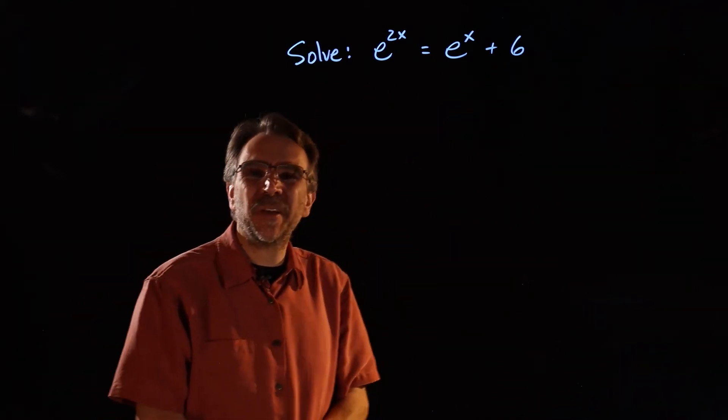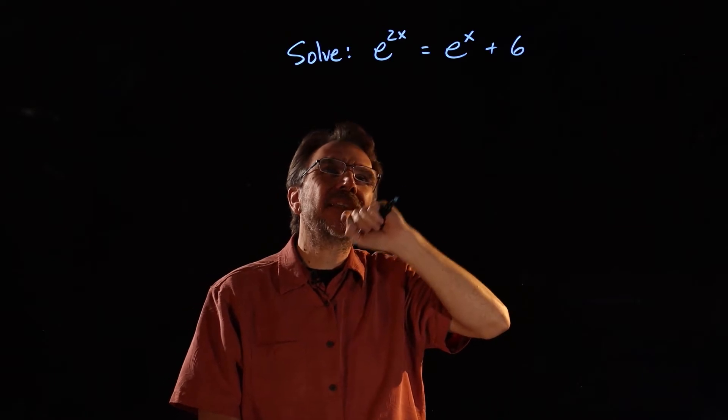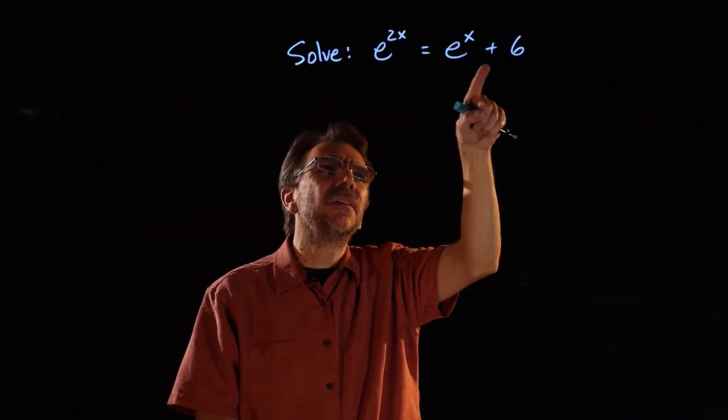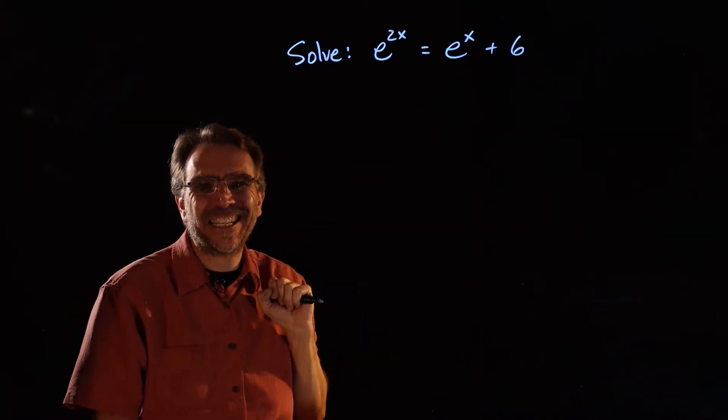Okay, so here we're asked to solve an exponential equation. Now this one's a little tougher. We can look at this and there's really not much we can do. We can't divide by e to the x or anything because we have a binomial on the right side.